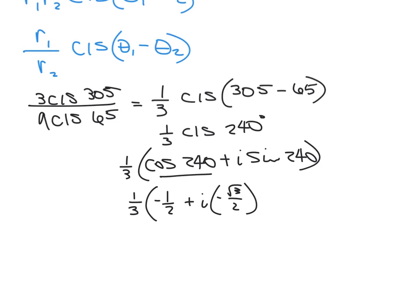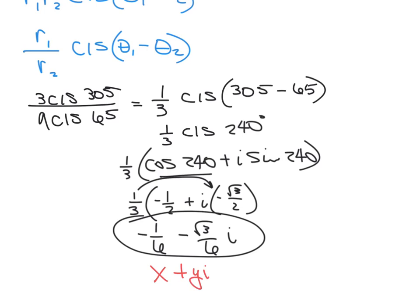That equals negative 1 sixth, and then this times this is going to be negative square root of 3 over 6 i. Can I reduce? Can I do anything? I cannot do anything. That's it. I do not put these two together as negative (1 minus square root of 3 i) all over 6, because I have to keep it in my x plus yi form. That's how you do the division.